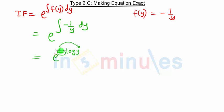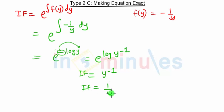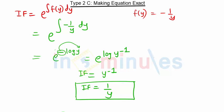The integral of 1/y is log(y), so we get e^(−log(y)). Using log rules, this becomes e^(log(y^(−1))). Applying the exponential-log cancellation rule, this equals y^(−1) = 1/y. So our integrating factor is 1/y. We now multiply this integrating factor with the given equation.